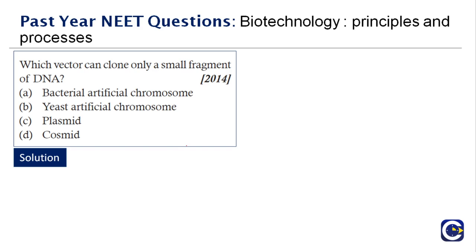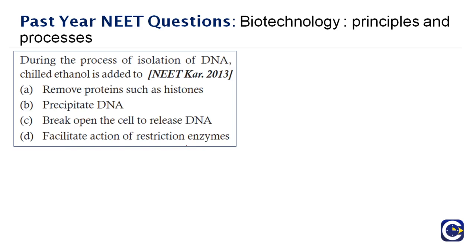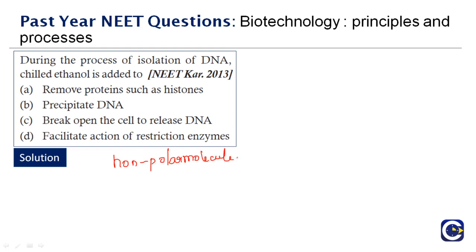Next question: during the process of isolation of DNA, chilled ethanol is added to blank. Ethanol is a non-polar molecule while DNA is a polar molecule with a net negative charge due to its phosphate groups. When DNA is placed in 100% ethanol, it becomes insoluble and precipitates out of solution. The correct answer is option B — chilled ethanol is added to precipitate DNA.